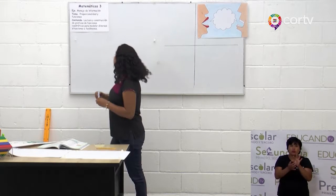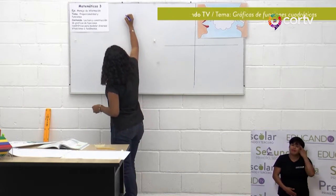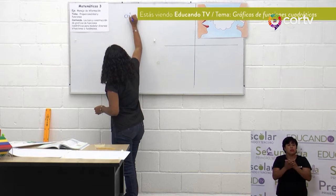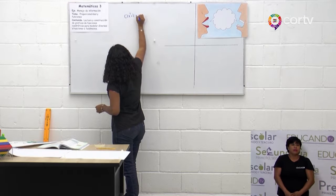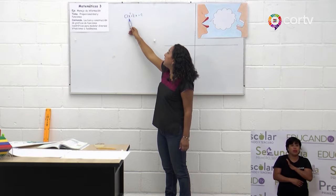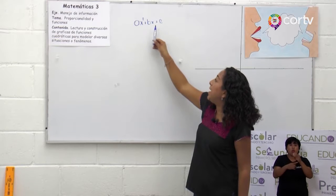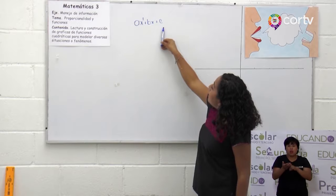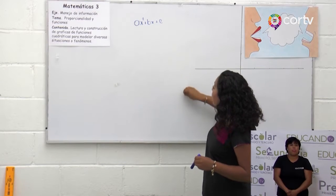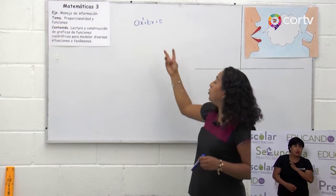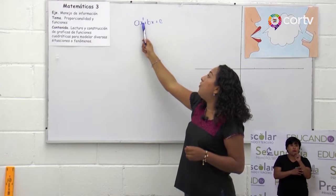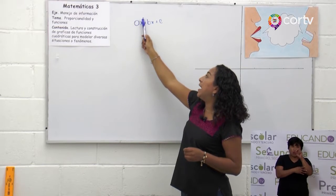Quiero decirte que recordemos que una función cuadrática está compuesta de los siguientes elementos: el valor cuadrático, el valor con literal y el valor independiente. Pueden estar los tres, pueden estar los dos o inclusive una. Pero para que sea función cuadrática, a fuerza tiene que estar x al cuadrado.